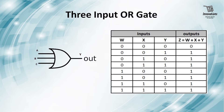Let us have a look at a three-input OR gate. As mentioned in the definition, an OR gate can have any number of inputs but only one output. In the three-input truth table, when all the inputs are 0 the output is 0, but when any of the inputs are 1, or all the inputs are 1, the output is 1.